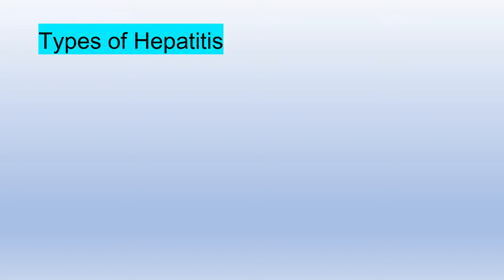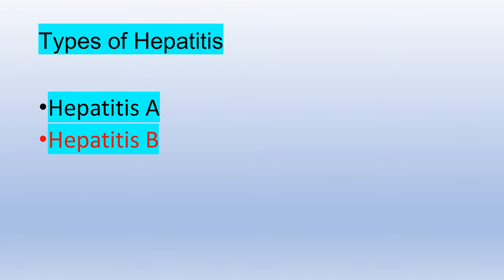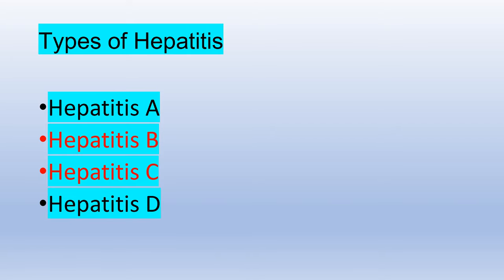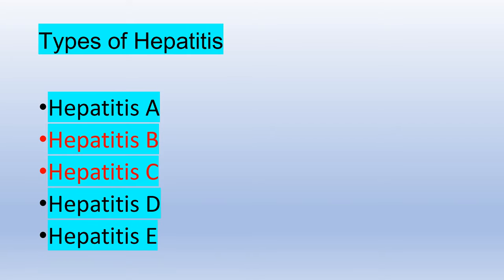Types of hepatitis: there are different types of hepatitis — hepatitis A, hepatitis B, hepatitis C, hepatitis D, and hepatitis E. Among them, hepatitis B and C are the chronic forms.